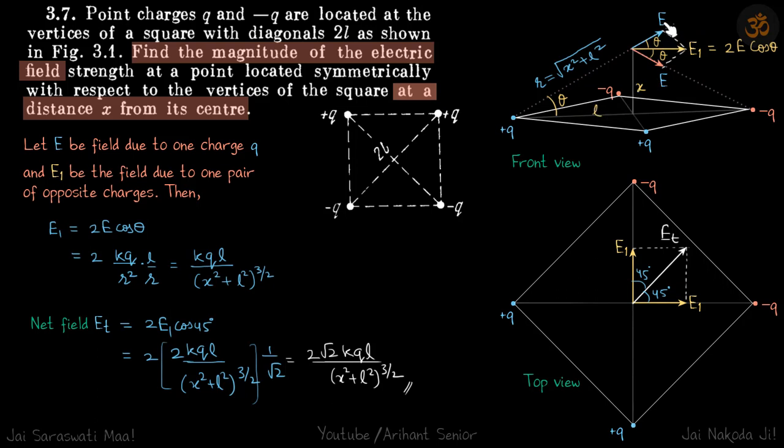Let E be the field due to plus Q, which will be in this direction. The field due to this minus Q will be in this direction. You can see that magnitudes will be the same and directions will be like this from horizontal.